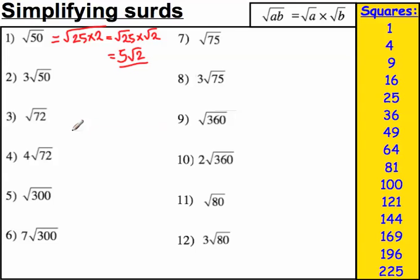Now imagine someone asks you, what's 3 times root 50? Well, if you know 1 lot of root 50 is 5 root 2, 3 times root 50 must be 3 times 5 root 2, which is simply 15 root 2. Easy as that.